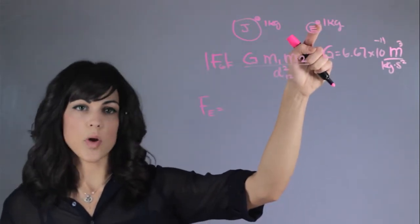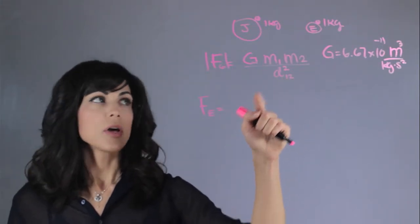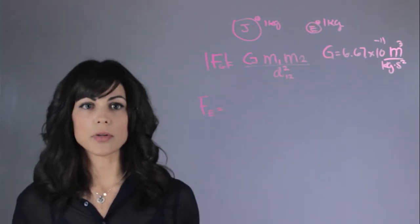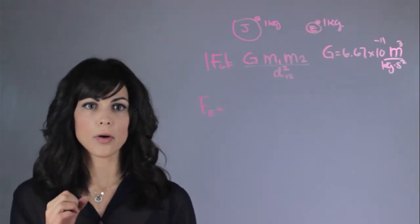Mass two is the mass of the rock, which is one kilogram. And then the distance between both of them, which is going to be the radius of the Earth, right? Because that's how far it is from the center of the Earth.